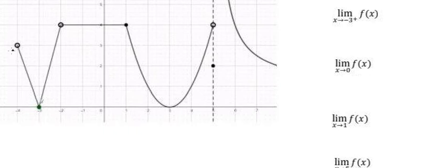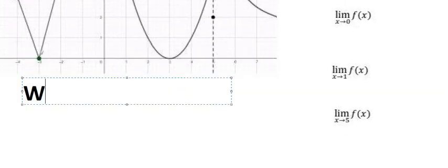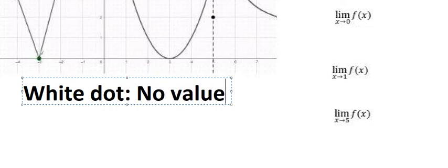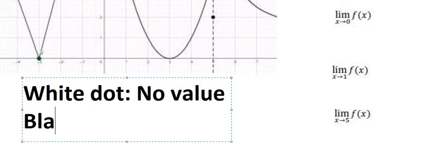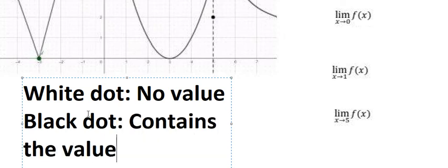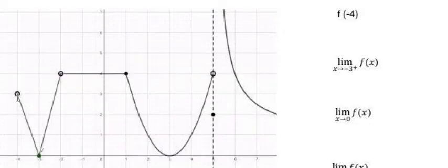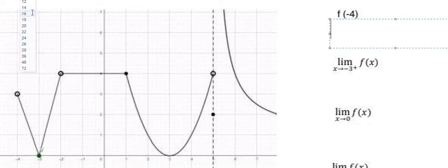However, this is about the white dot. We know that the white dot means no value — as opposed to the black dot, which contains the value. So in this situation we have the white dot, which means no value, so we can write 'does not exist' or we can write 'no value'.